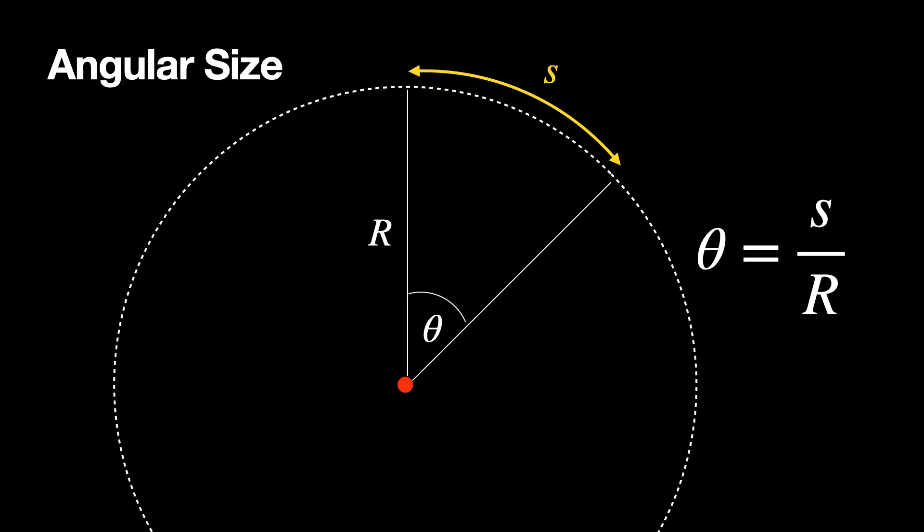And this is just normal geometry. If you go all the way around, then you can see you get the circumference of a circle. It's just a fraction of the circumference. That's all that is.